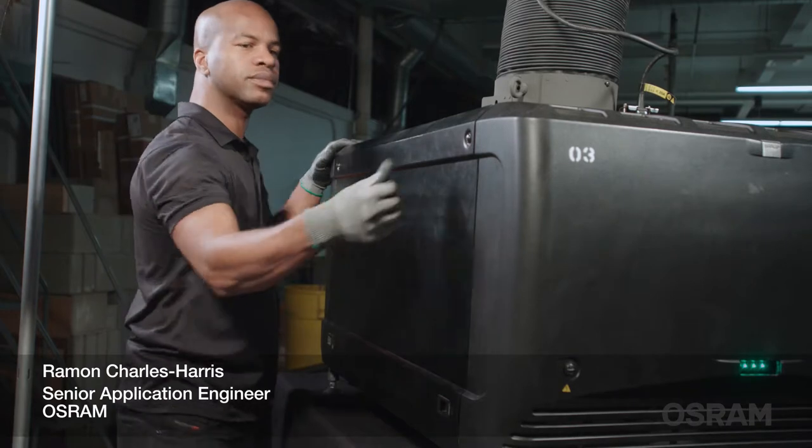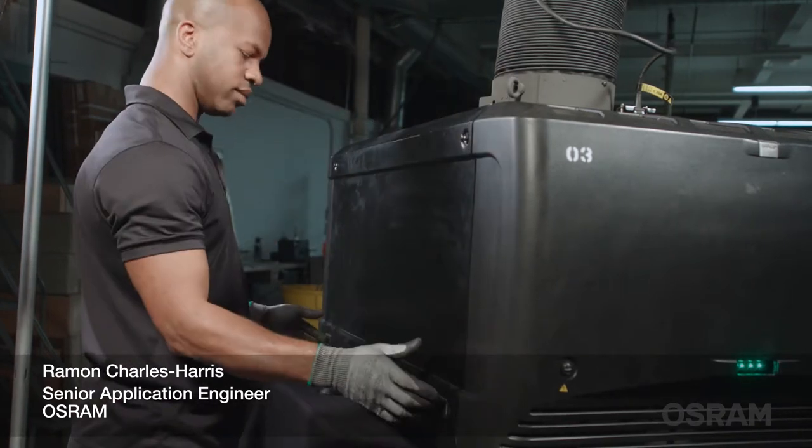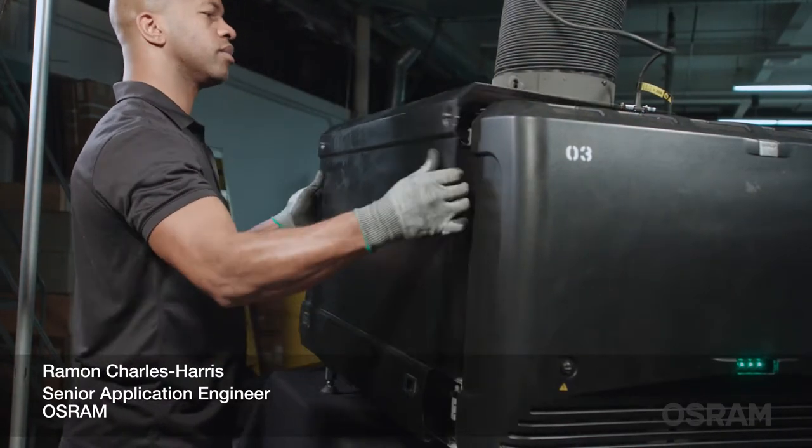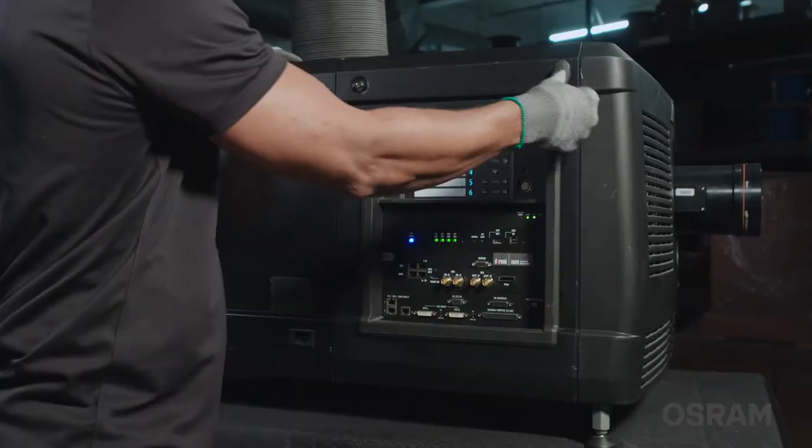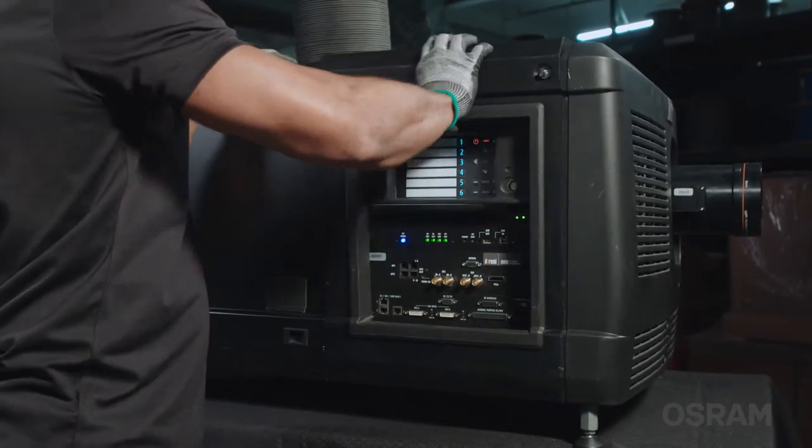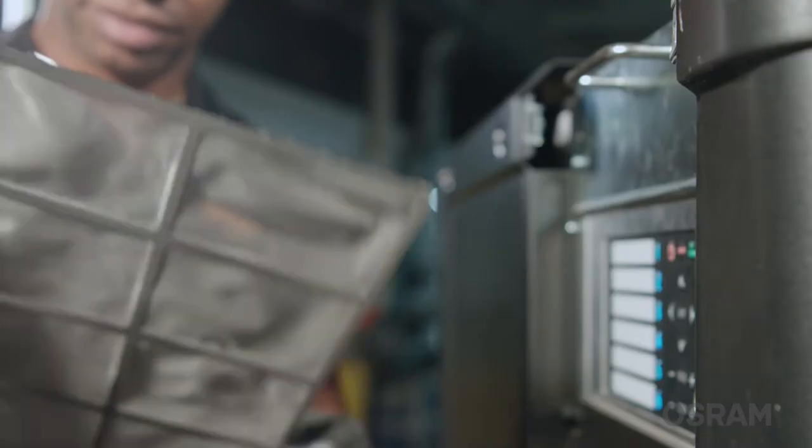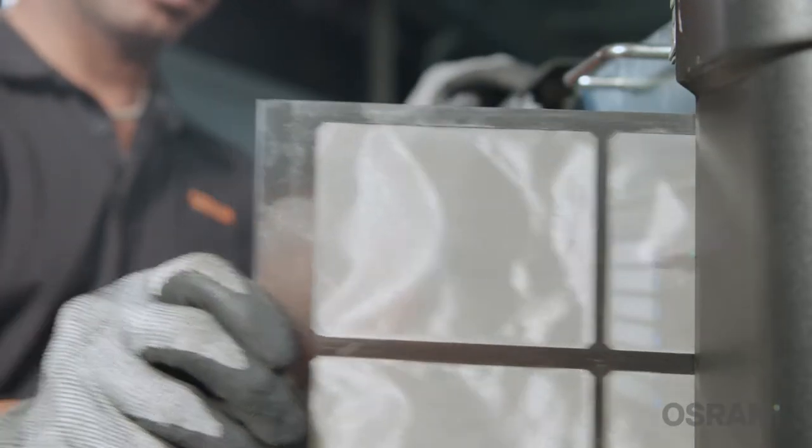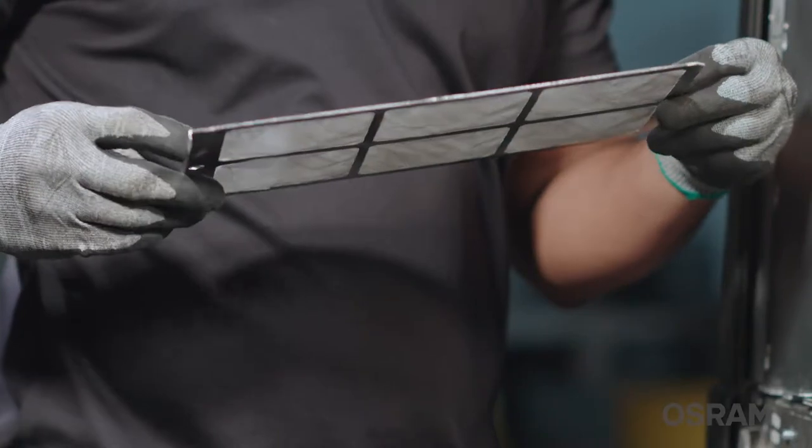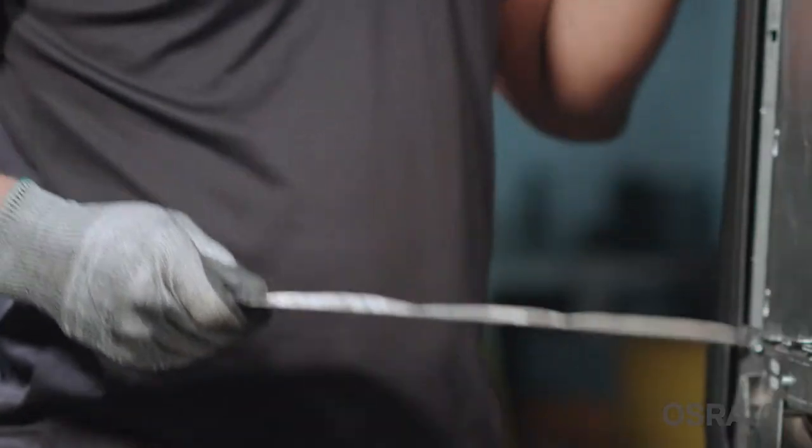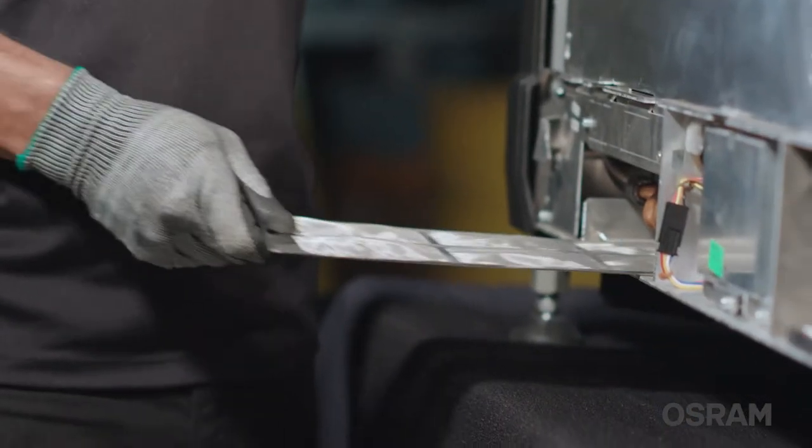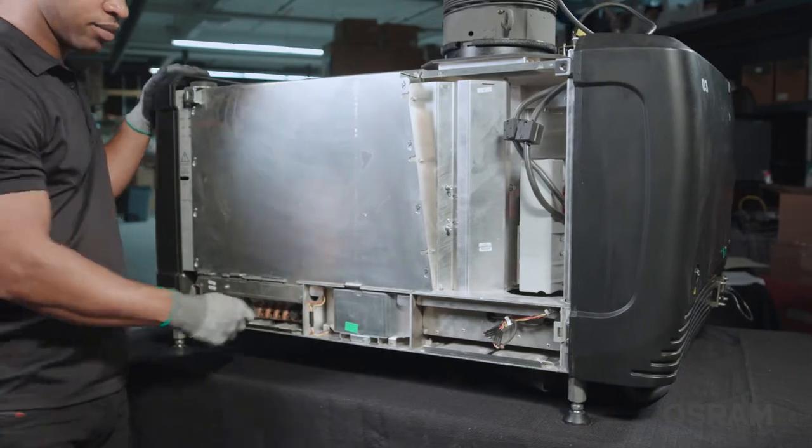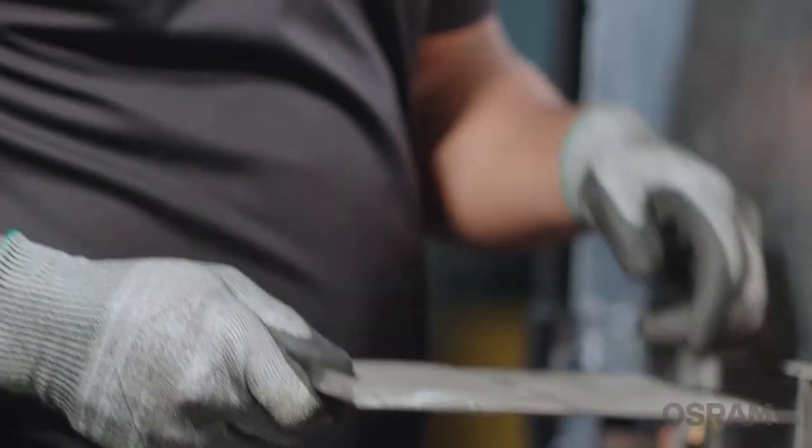Barco projectors have three filters that need periodic cleaning. To access the filters, the left side cover and the input cover will need to be removed. Here is the card cage filter, here is the heat exchange filter, and here is the igniter SPG filter.